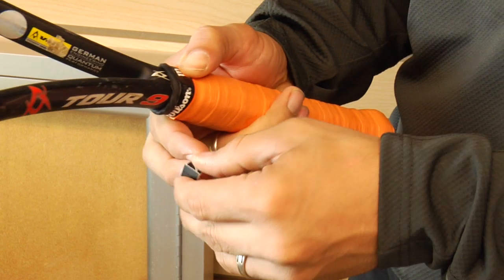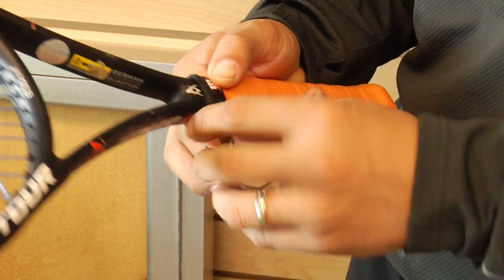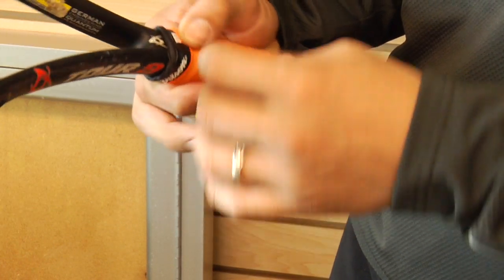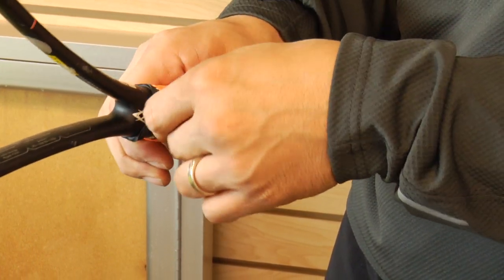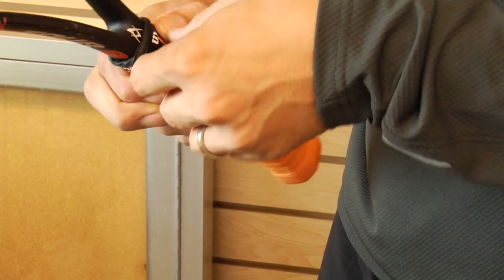Once you get to the finish up here, you're going to take that finishing tape, open it up. This tape almost feels like electrical tape. You're going to put it right here at the end of your replacement grip.